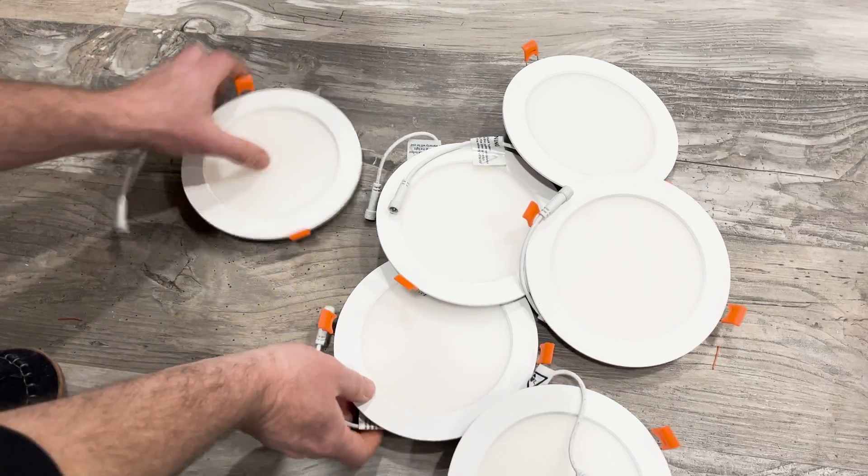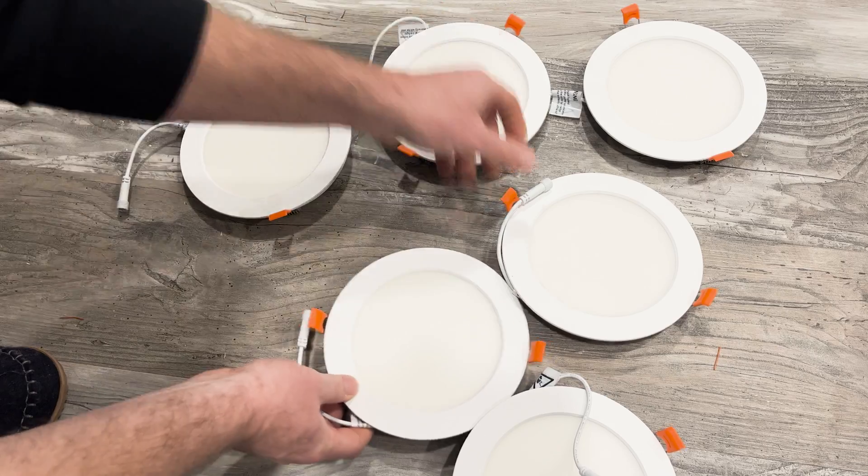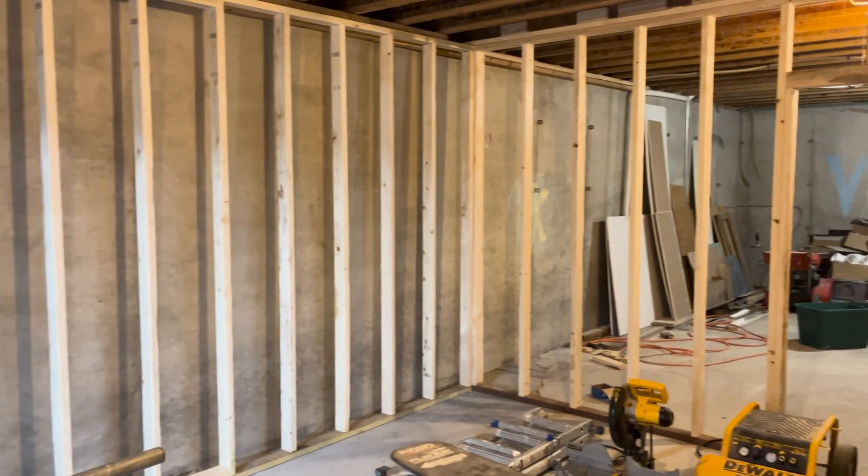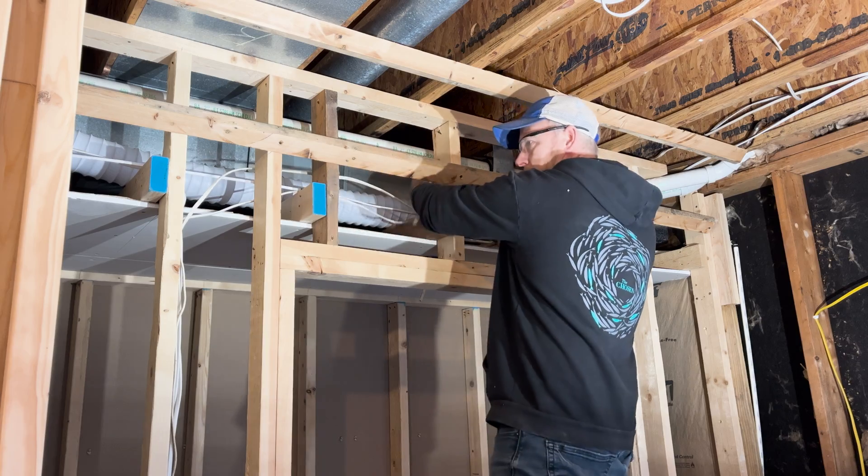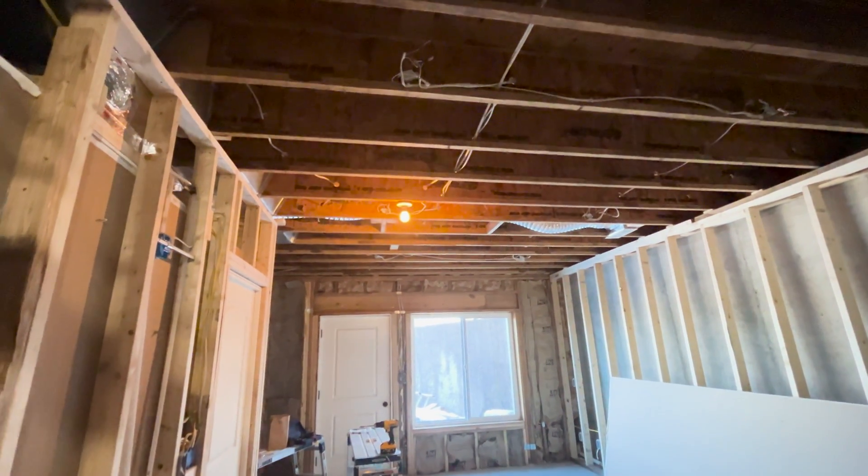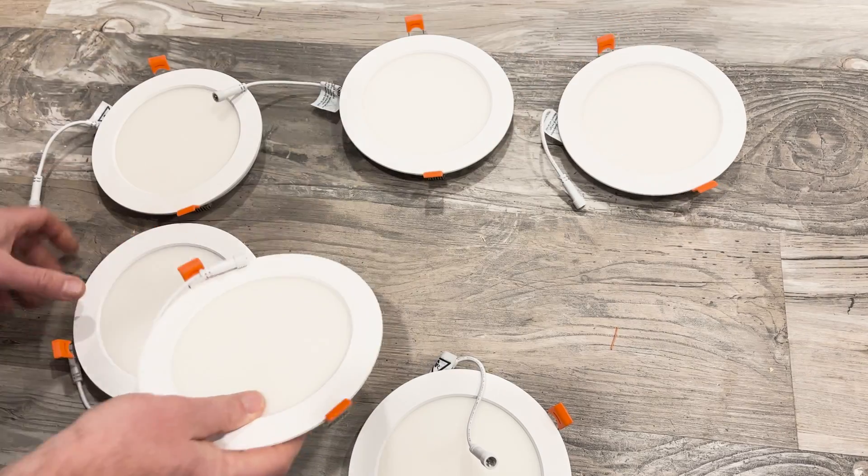Start with deciding how many lights and how many rows that you want to install. My room is 207 inches long and 140 inches wide with a small inset space in front of the closet. I'm using six lights in this main area and dividing them into two rows of three lights each.